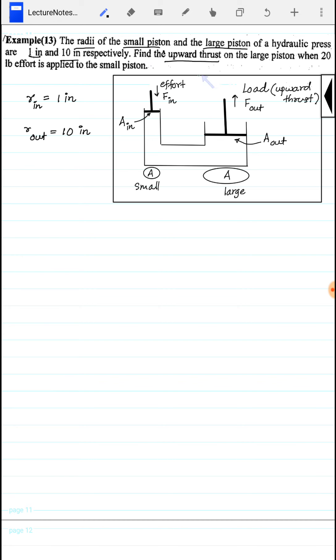We need to find the upward thrust on the large piston. So F_out, we need to find the upward thrust F_out.